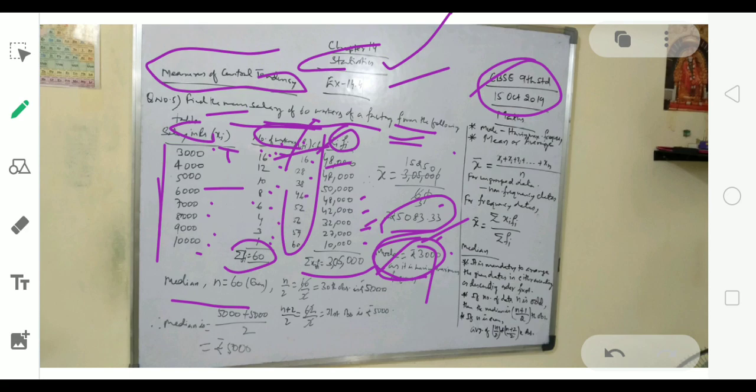46 plus 6 is 52, 52 plus 4 is 56, 56 plus 3 is 59, and 59 plus 1 is 60. This last one totals to 60. This cumulative frequency is required.